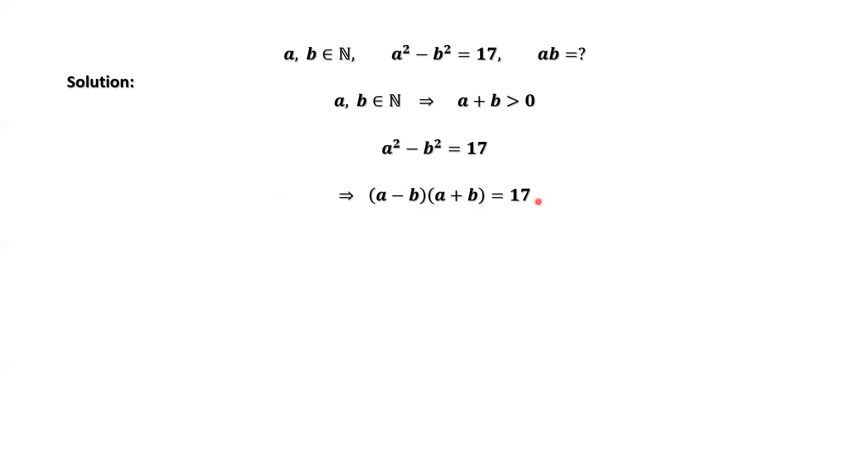17 is positive. A plus B is positive. Therefore, A minus B must be positive. If A minus B is negative, negative times positive is negative. That means the left-hand side is negative, but the right-hand side is positive. Therefore, it is impossible. Then we have A minus B is bigger than zero.